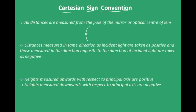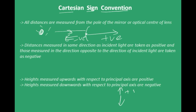Distances measured in the same direction as incident light are taken as positive, and those measured in the direction opposite to the incident light are taken as negative. If light is coming from the left, distances to the right are positive and distances to the left are negative. Heights measured upwards with respect to the principal axis are positive, and those measured downwards are negative.